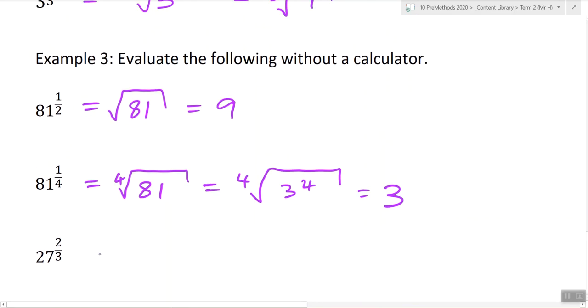One more. I've got 27 to the 2 over 3. So the 2, where's the 2 go? Right, and the 3 is on the left.